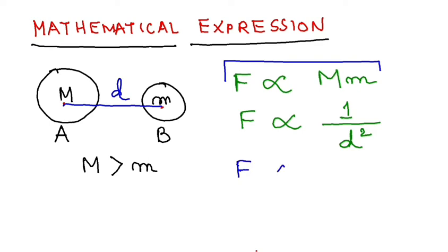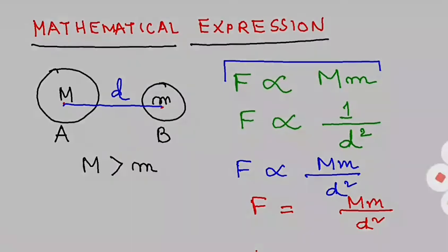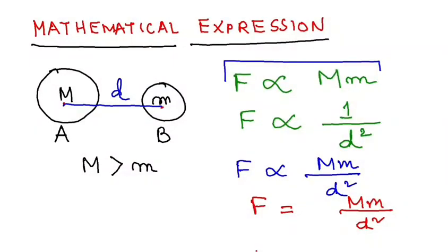Now, coming back to the equations, if I combine these two equations I'll get F is proportional to Mm by d square. Now I'll equate them, so F is equal to Mm by d square. I have to apply a constant here; that constant is nothing but capital G. So this is the expression for universal law of gravitation.